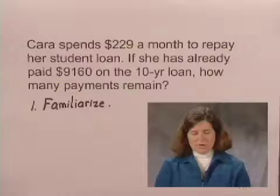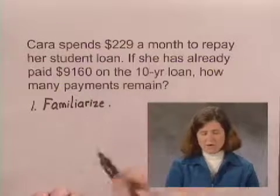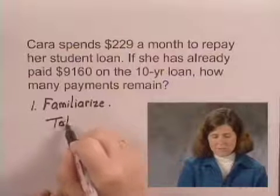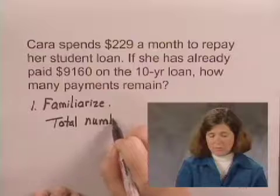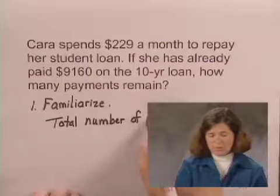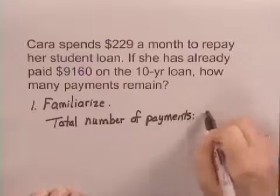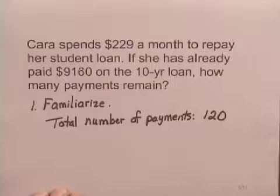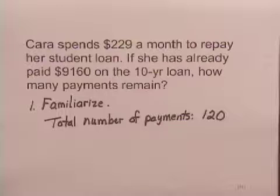Something we can observe is that if she has monthly payments for 10 years, she's going to have to make 10 times 12 for 120 payments in all. So if we can figure out how many payments she's already made, we can use this number to find out how many payments remain.